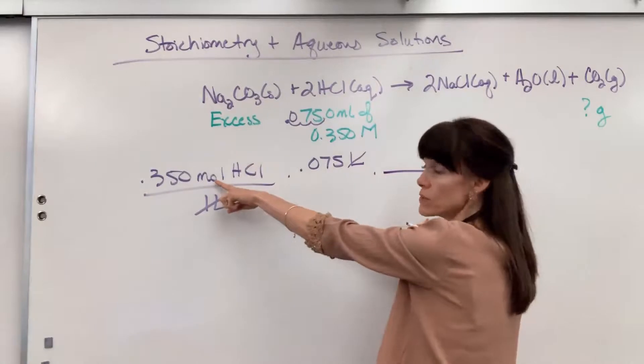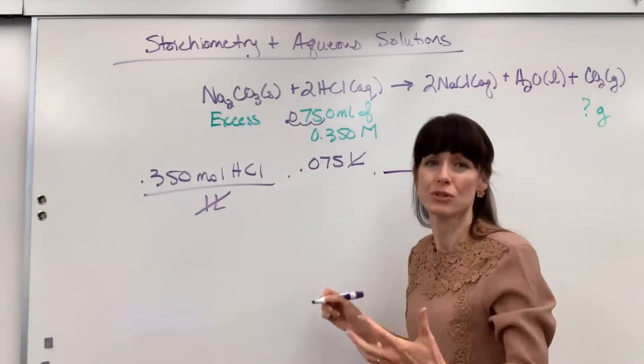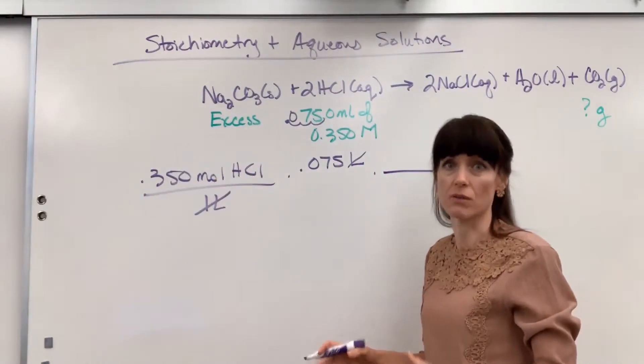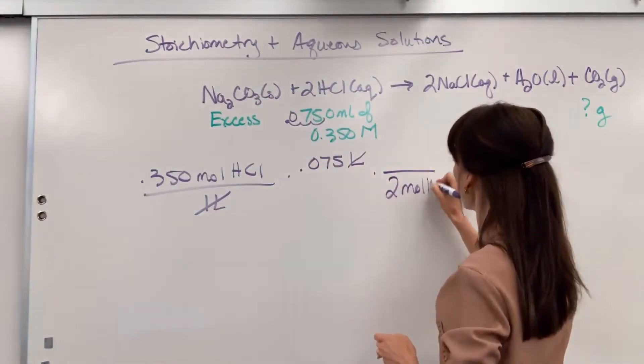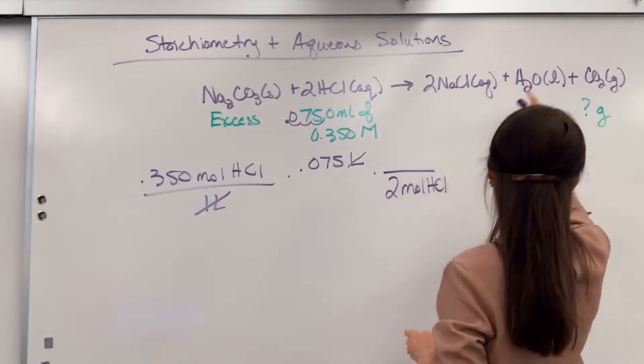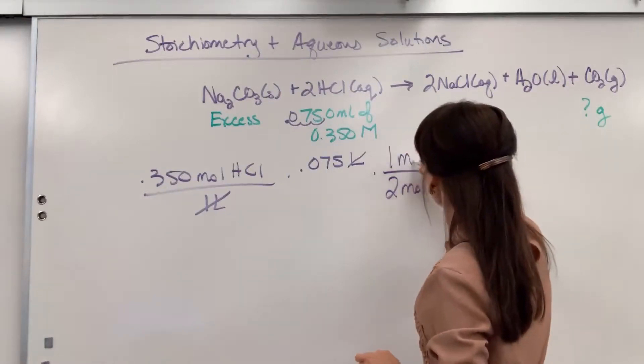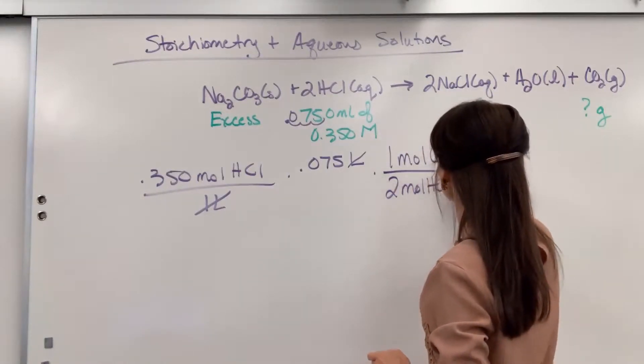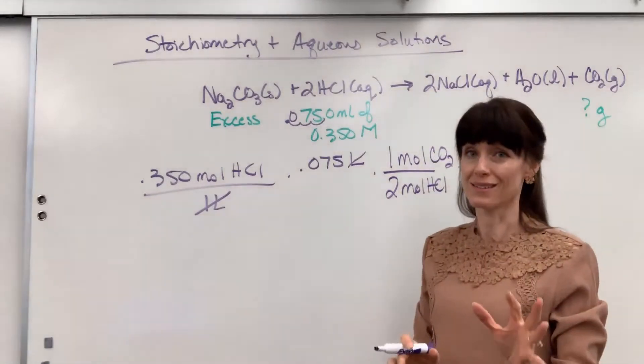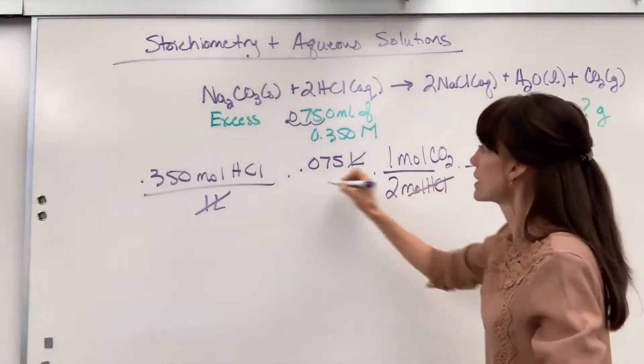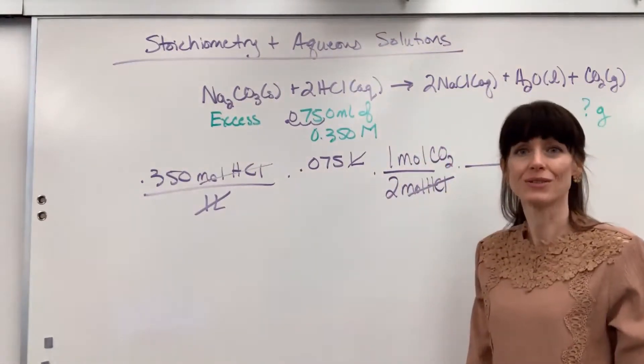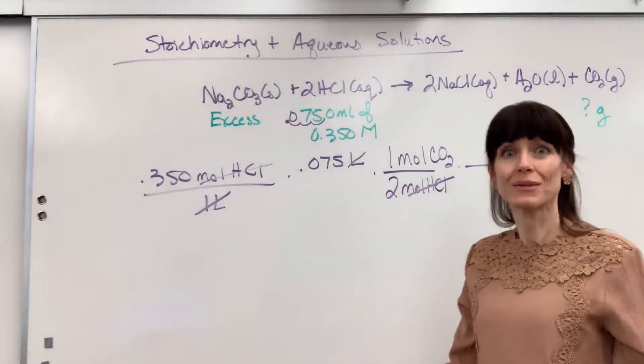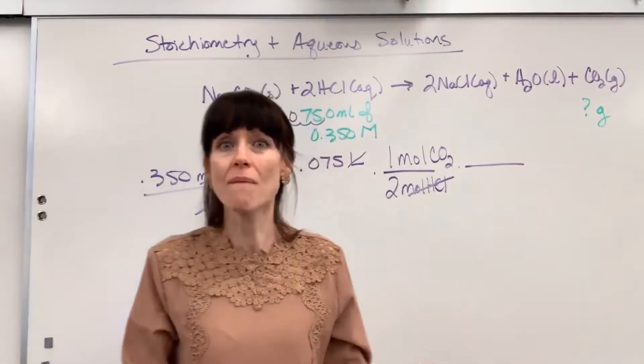I want to get rid of moles of HCl. And notice how I use units. The units will tell you what to do. Always look at your units. We have two moles of HCl will produce one mole of CO2. Let's pause and look at the units. Moles of HCl cancels and now I have moles of CO2. We walked the bridge. I'm to my new compound now.